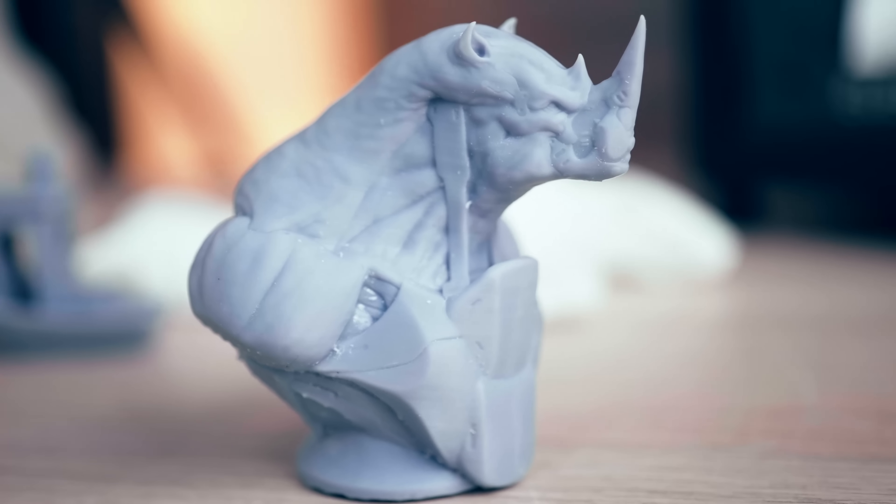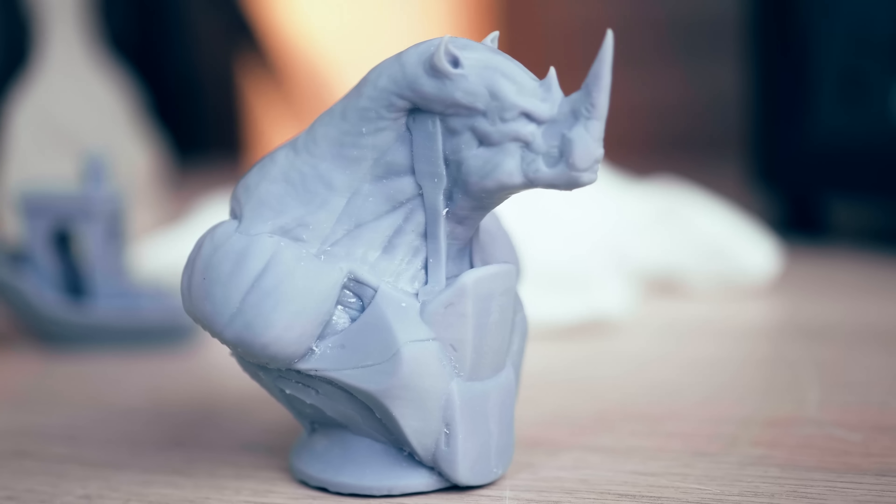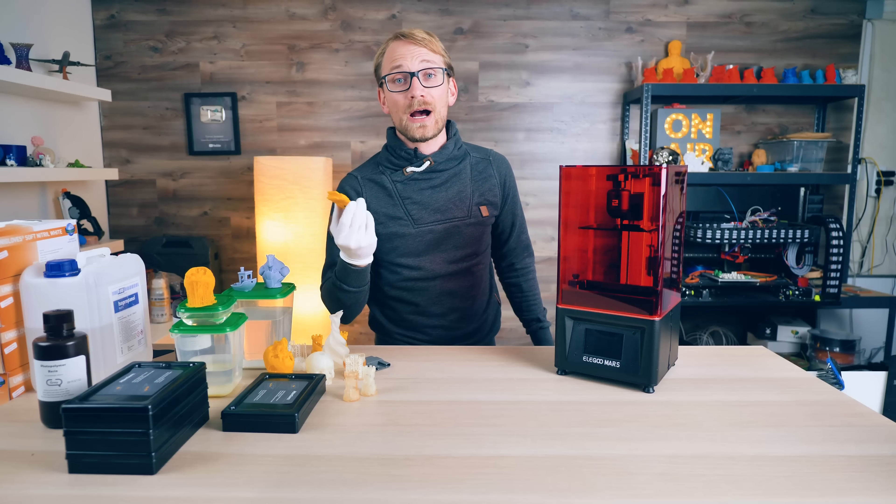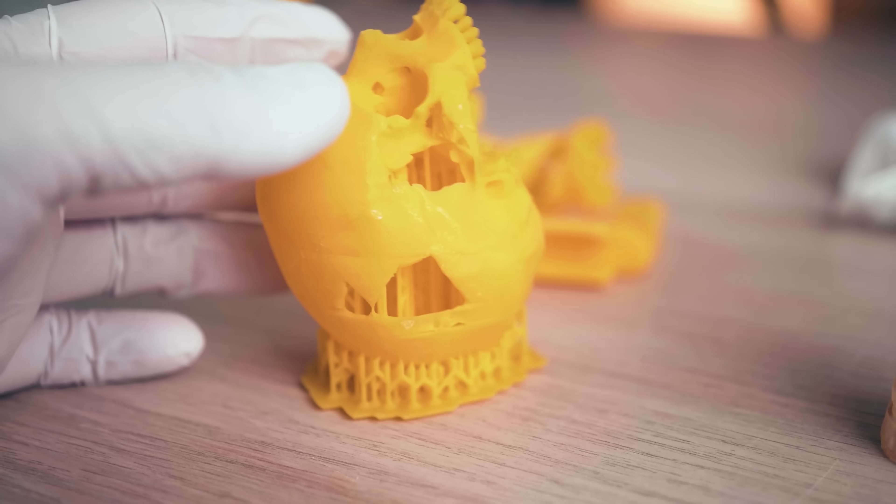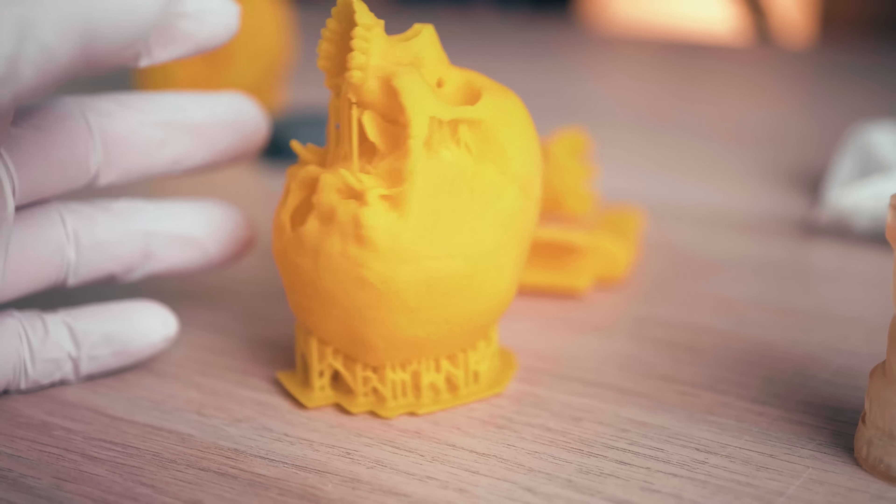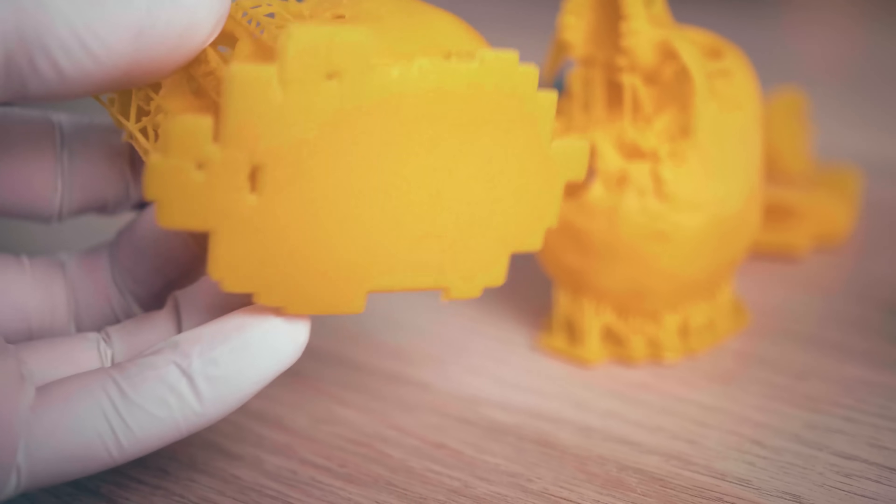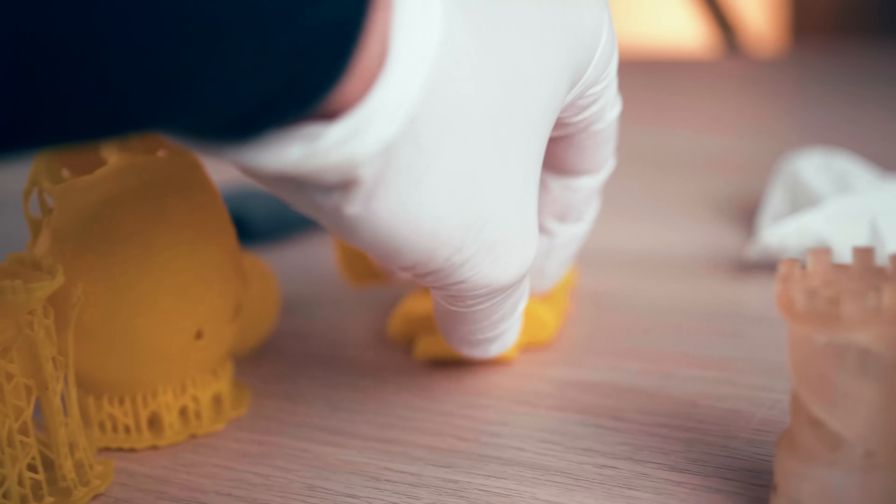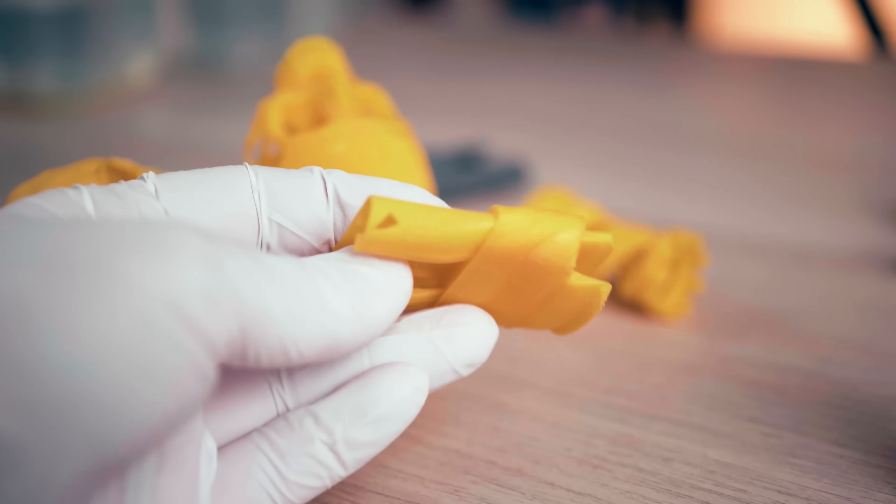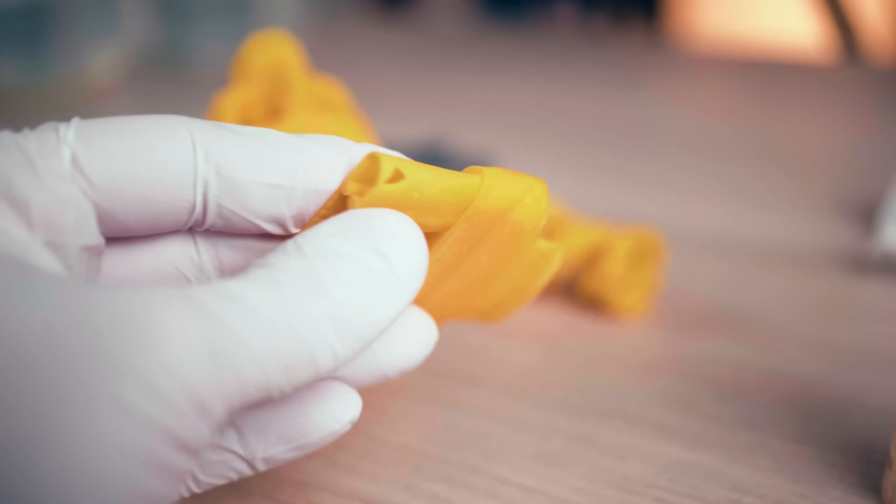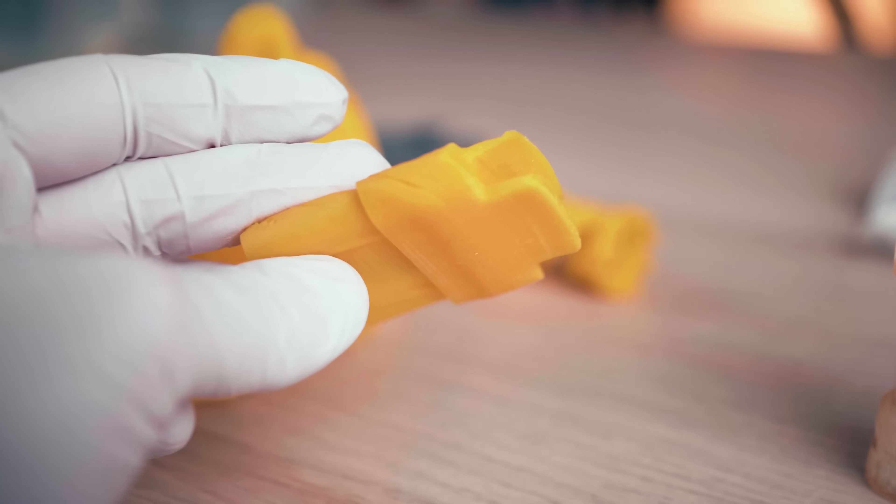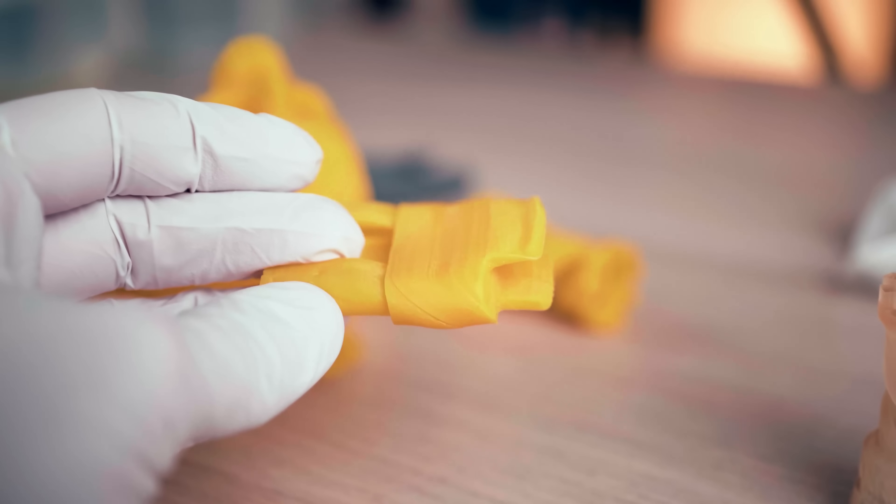The prints with the Elegoo resin on the Mars are clean, crisp, detailed, have only minimal warp, while the prints with the Wanhao resin actually warped a lot, supports broke off during the print, and actually, I could never get the parts to fully harden and cure, even leaving them out in direct sunlight. These still feel tacky and soft, even after two days of curing.